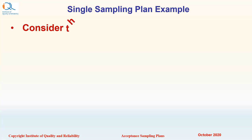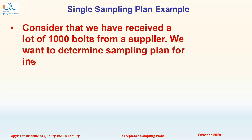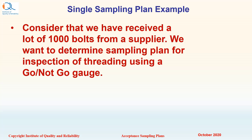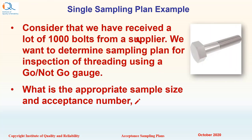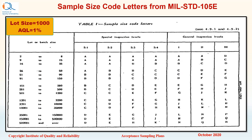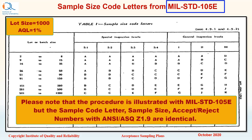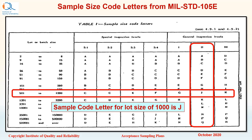Let us now understand the procedure with an example. Consider that we have received a lot of 1000 bolts from a supplier. We want to determine the sampling plan for inspection of threading using a go/no-go gauge. What is the appropriate sample size and acceptance number if AQL is 1%? Go and no-go inspection will generate attribute data, and therefore sampling plans for attributes will be used. The lot size is 1000 and the AQL is 1%. Here I am showing an illustration of MIL standard 105E. The default inspection level is 2, and the sample code letter for lot size of 1000 at level 2 inspection is J.